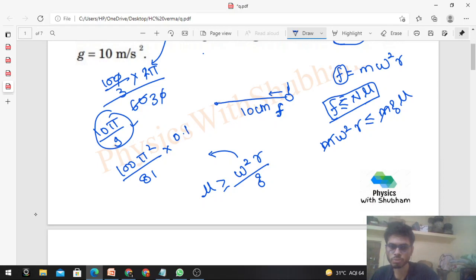Times r, which is 10 centimeters or 0.1, divided by g value 10. So μ is greater than or equal to π²/81.